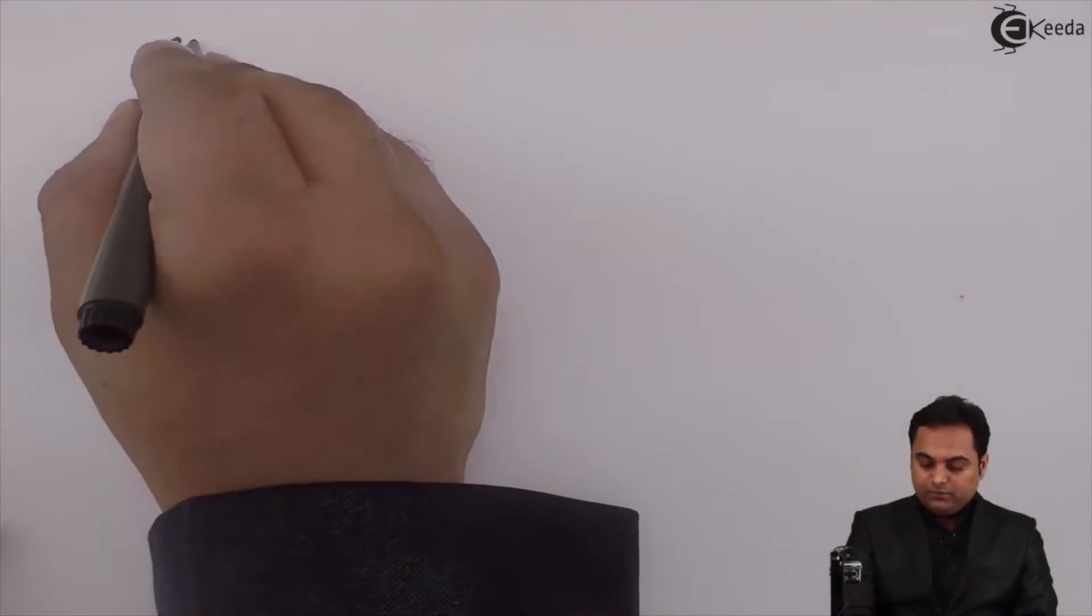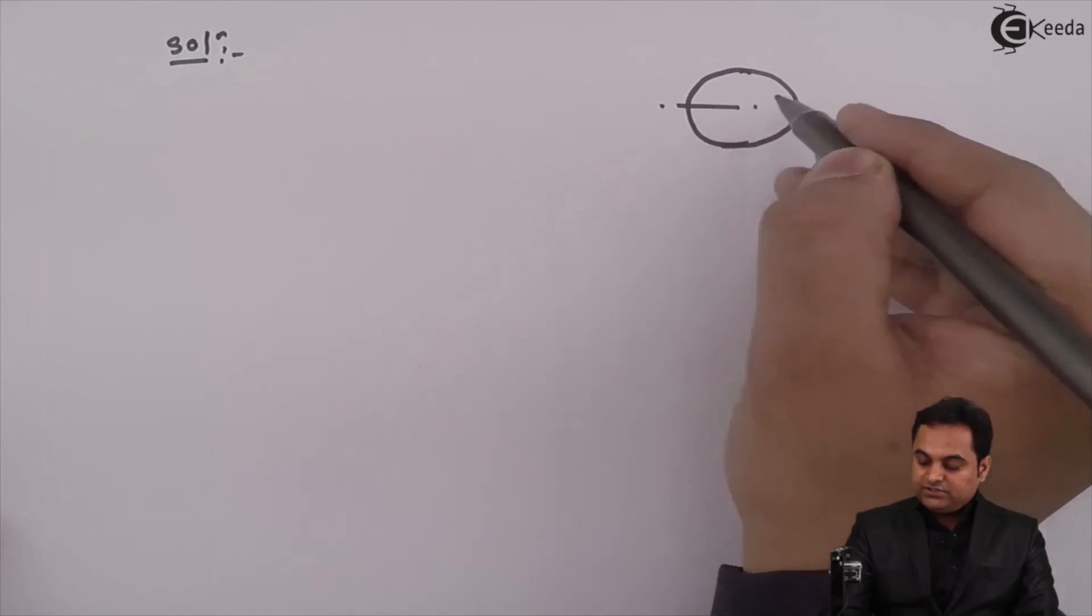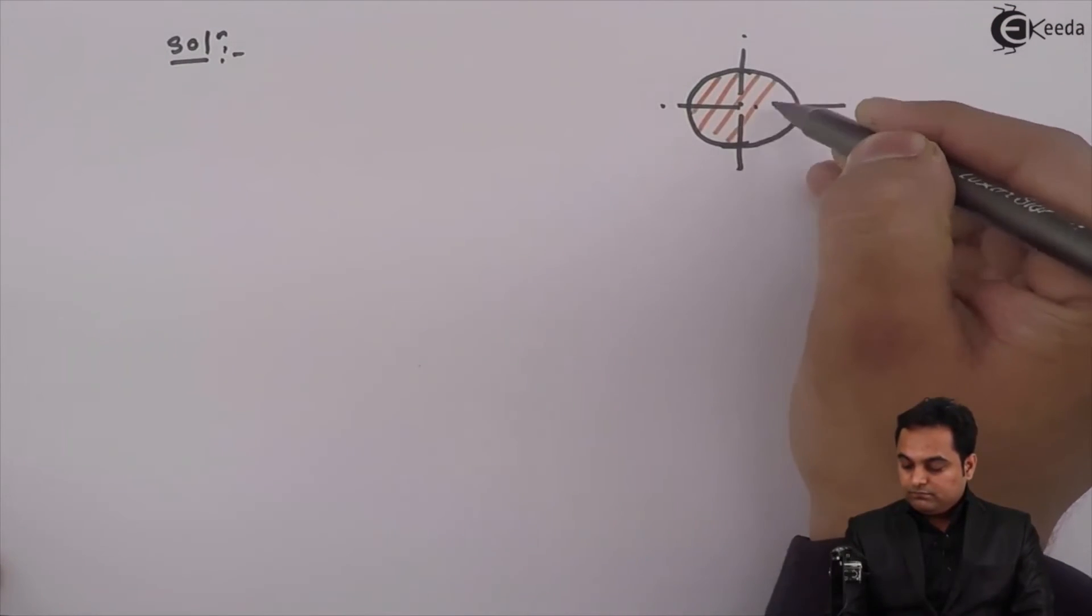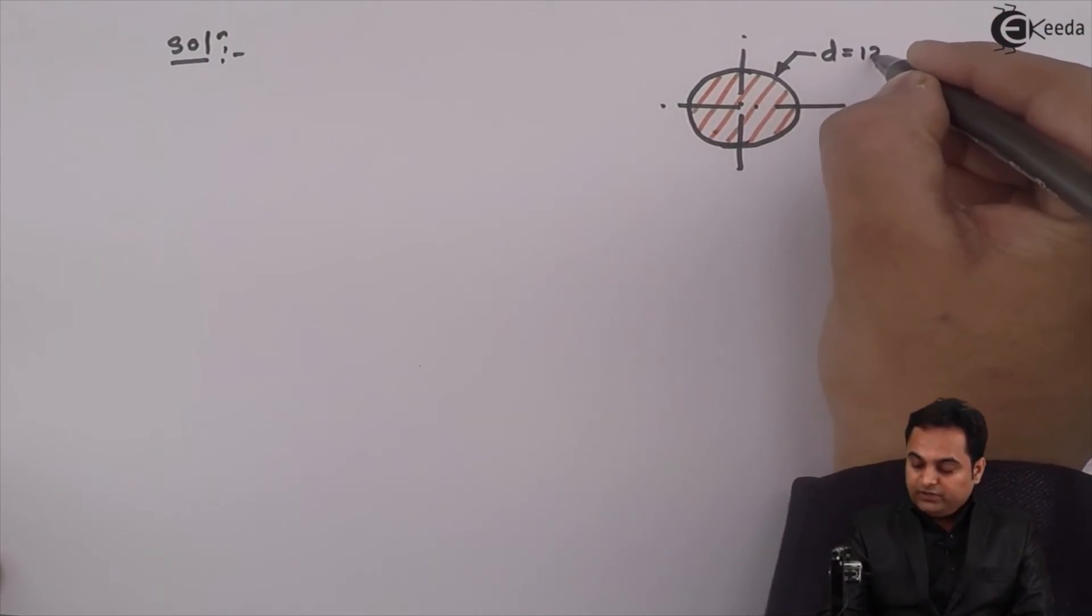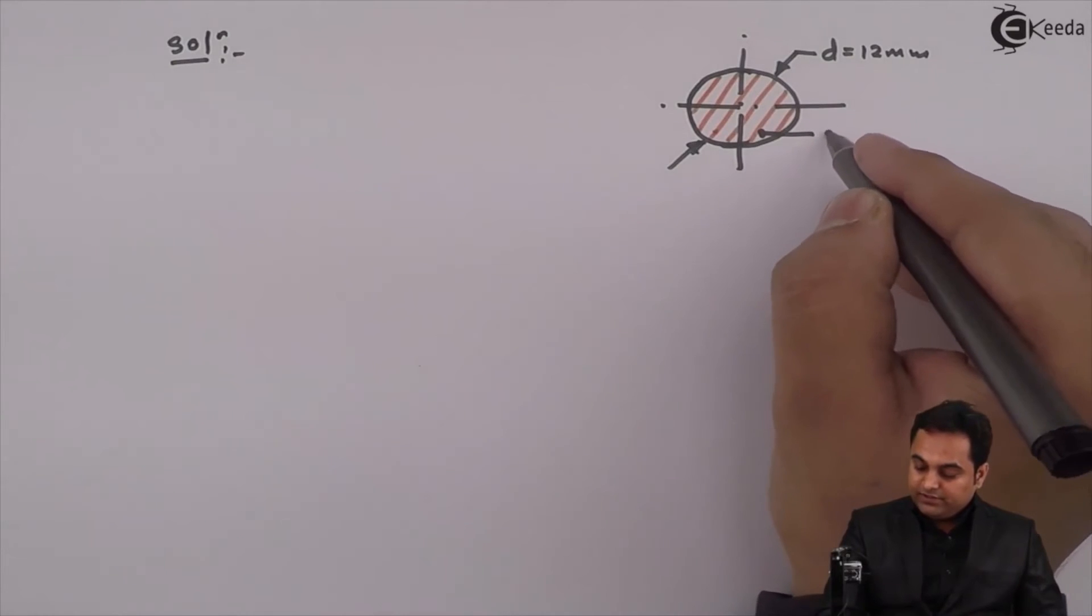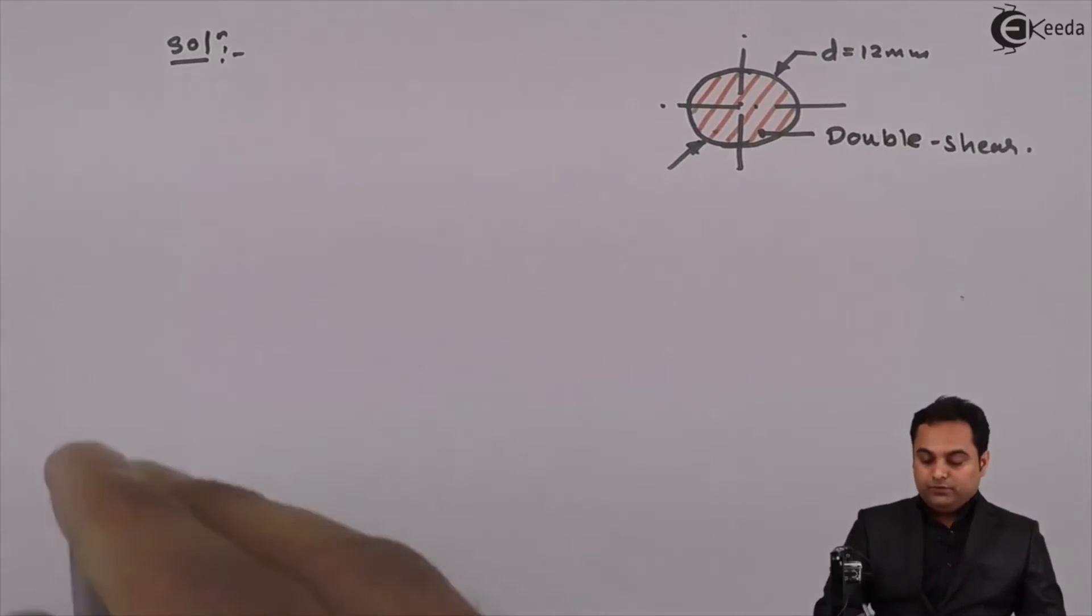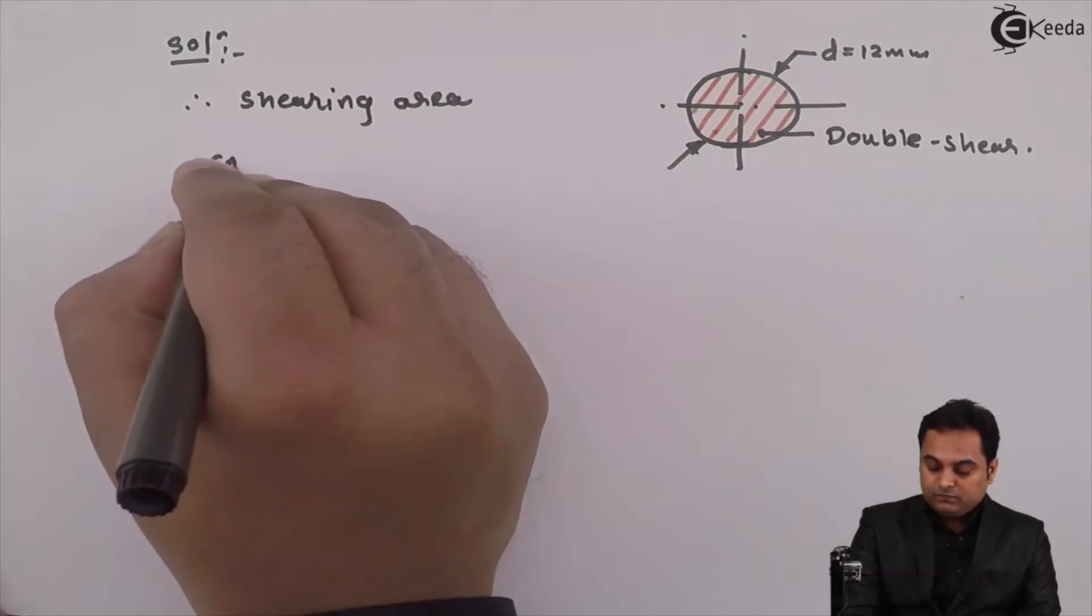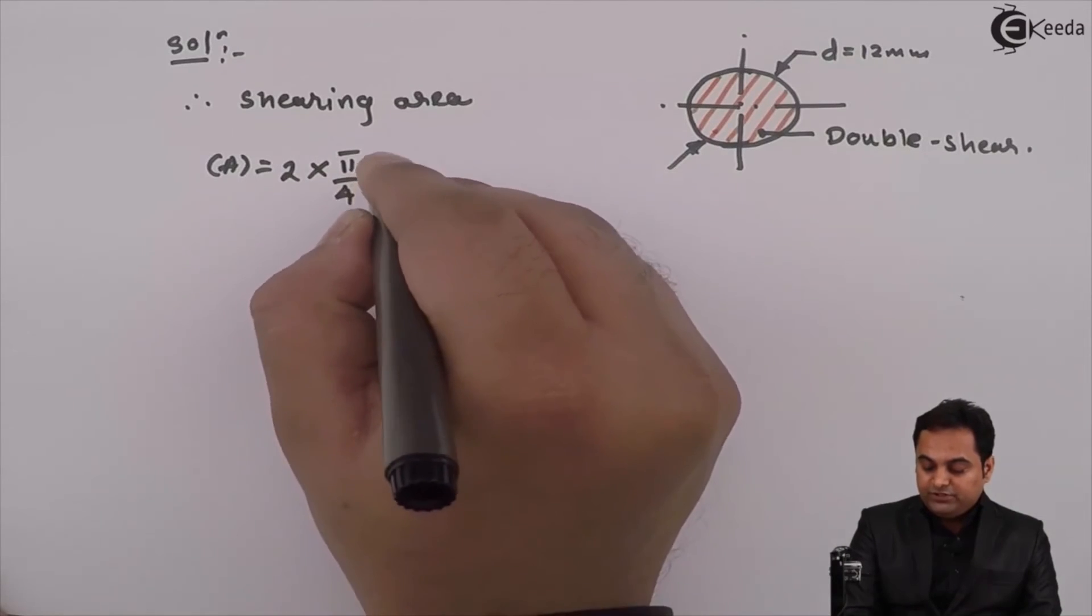So I will write down in the solution part, the cross section is a circle having diameter D, it is equal to 12 mm. And since we have seen it is a case of double shear, so here I will write down, it is double shear. Now therefore, shearing area is equal to, double shear we have to multiply by 2, and it is pi by 4 into D square.